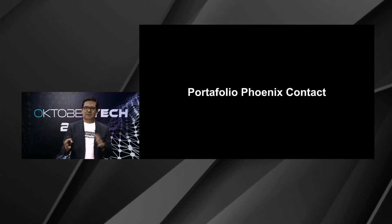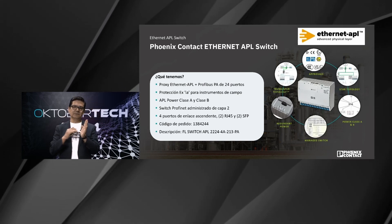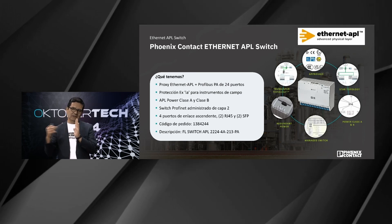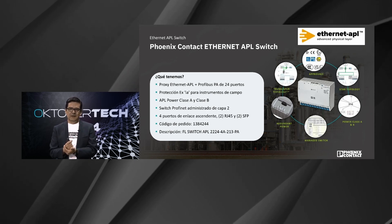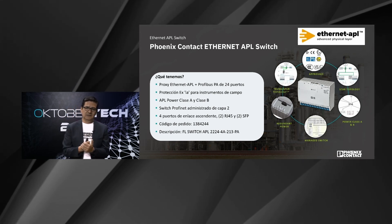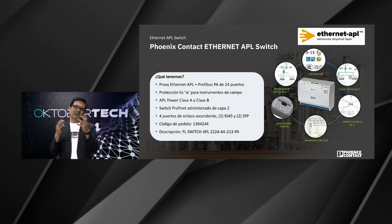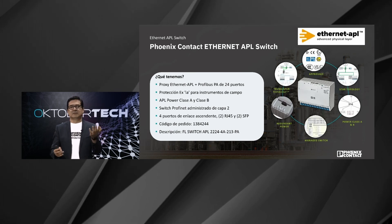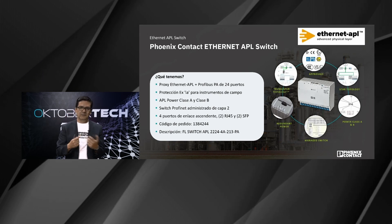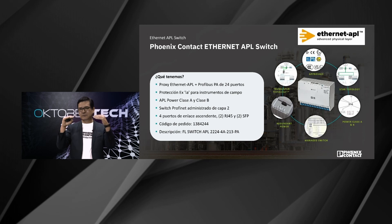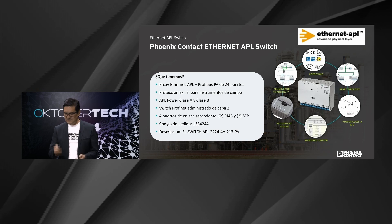Hablemos del portafolio de Phoenix Contact. Nuestro switch de campo Ethernet APL es un switch que además tiene funcionalidad de proxy, lo que permite integrar instrumentación Profibus PA existente. Tenemos la opción de trabajar en áreas clasificadas. La clase de potencia APL clase A y B tiene relación con los tipos de consumo, similar a las clasificaciones de PoE. El switch es capa 2 y administrado; en la parte superior tiene bocas de cobre y de fibra. Es un equipo release, disponible, que pueden encontrar en nuestra página web.